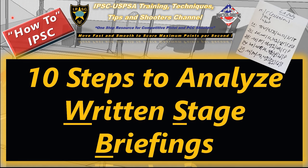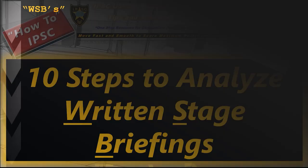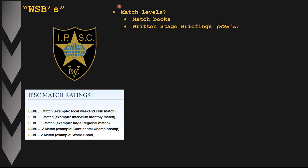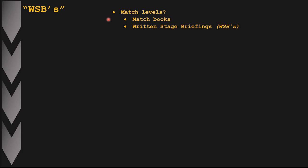Hi guys, in today's how-to video I want to present the 10-step process I use to analyze written stage briefings for IPSC matches. Depending on the level of IPSC match you're about to shoot — level one up to level five — the match organizers might make available to all registered competitive shooters, either on a voluntary basis or as required per the rulebook, a fully fledged matchbook that describes all relevant information pertaining to the match.